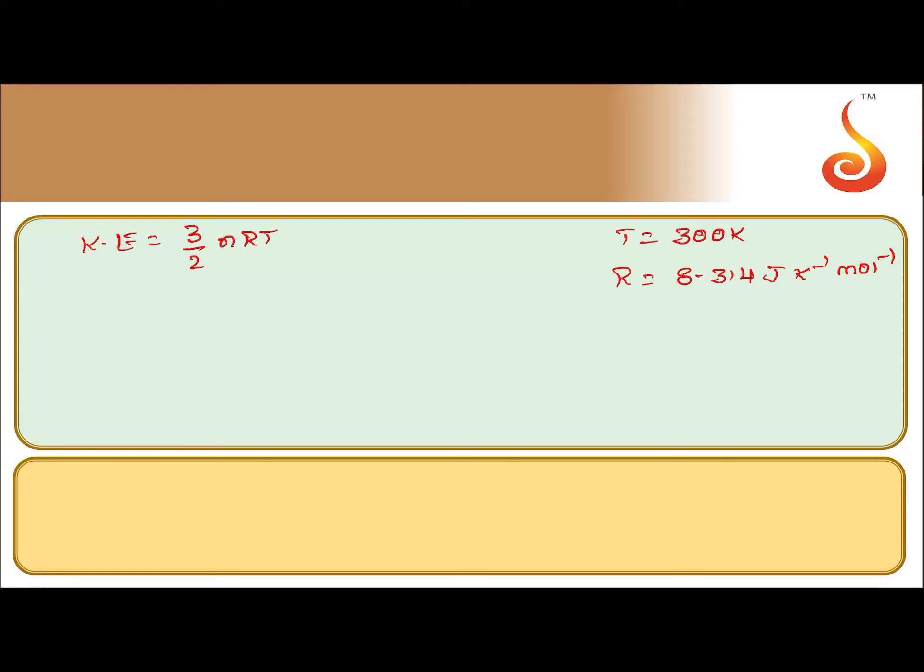N is number of moles. Mass is given, so number of moles is equal to given mass by molar mass. What is given mass? 8. Molar mass is 32. 8 by 32 is 1 by 4, which is 0.25.